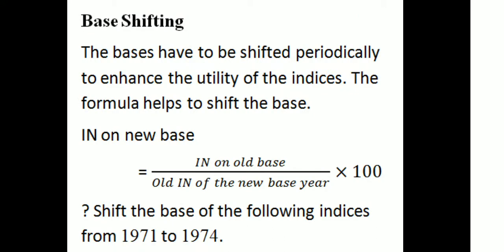Then, base shifting. The base has to be shifted periodically to enhance the utility of the index. The formula helps to shift the base. Index numbers on new base are normally calculated as: index number on old base divided by old index number of new base, into 100.